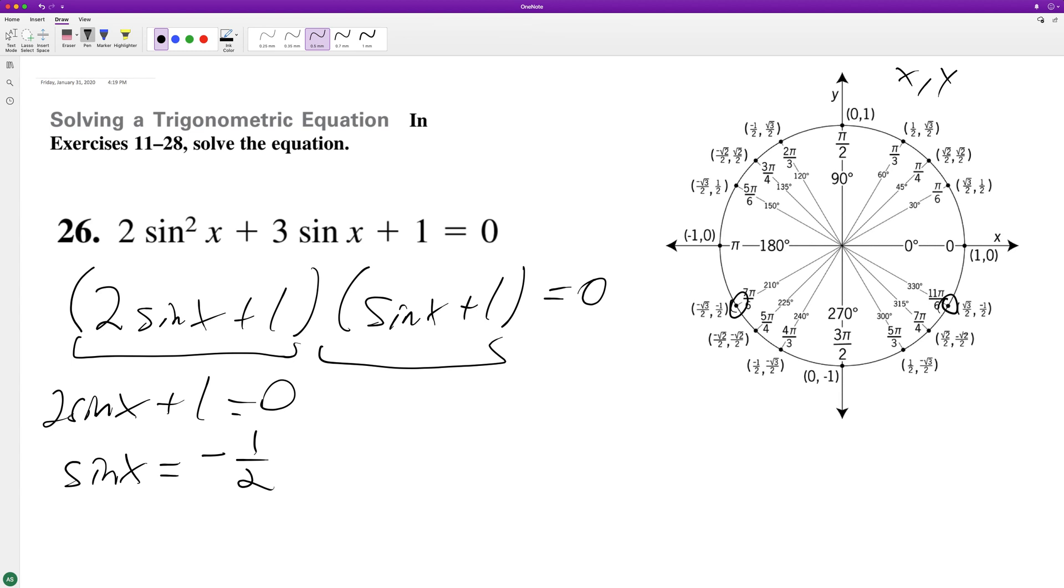What about this? Where is sine equal to negative 1? Only at 3 pi over 2.